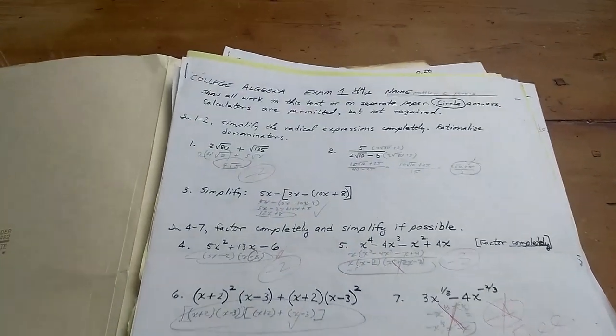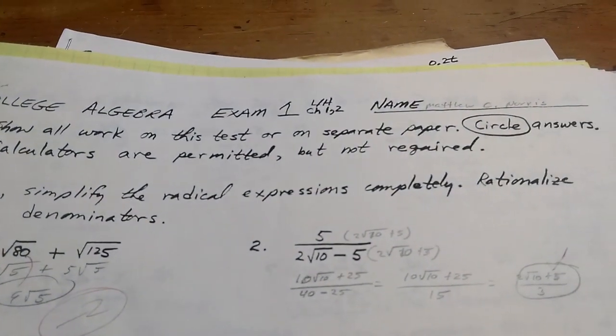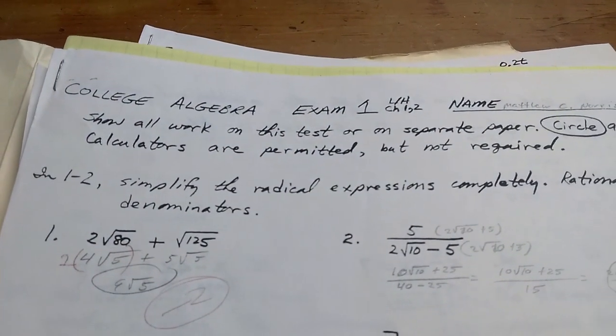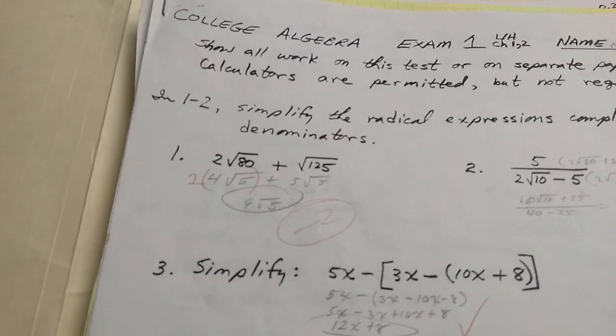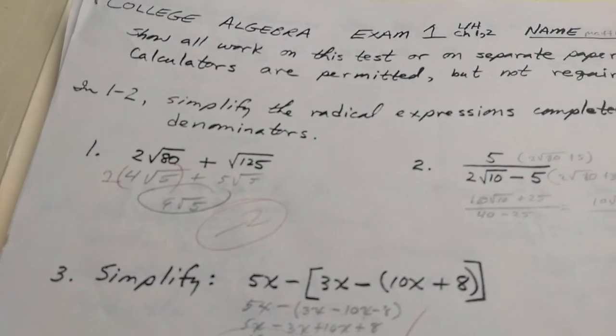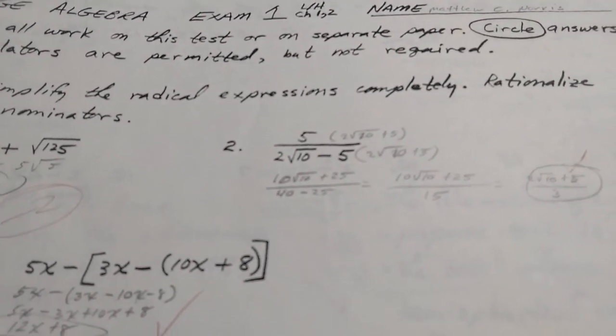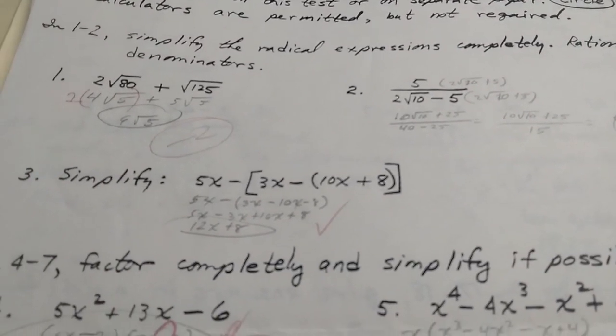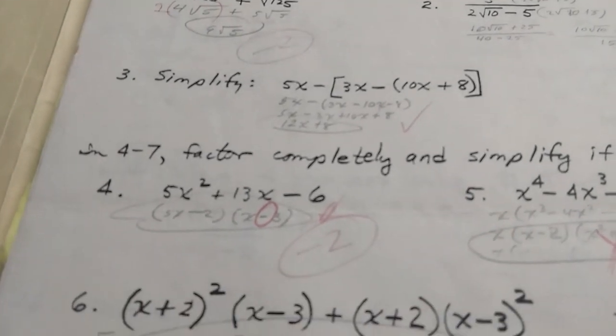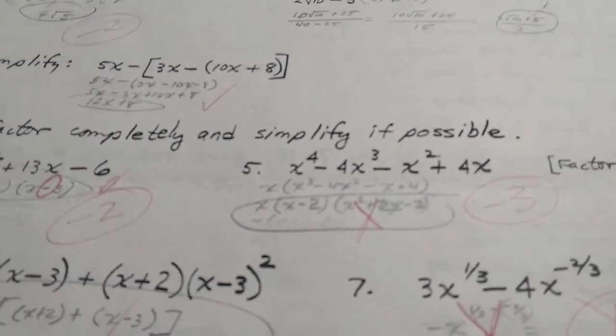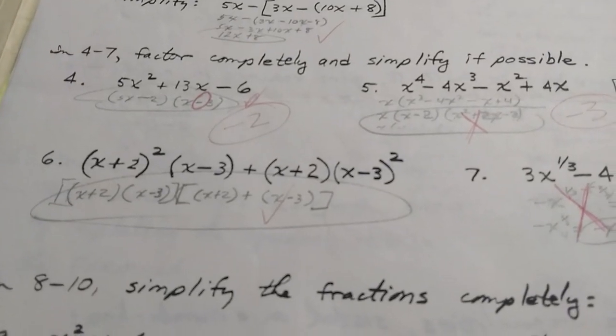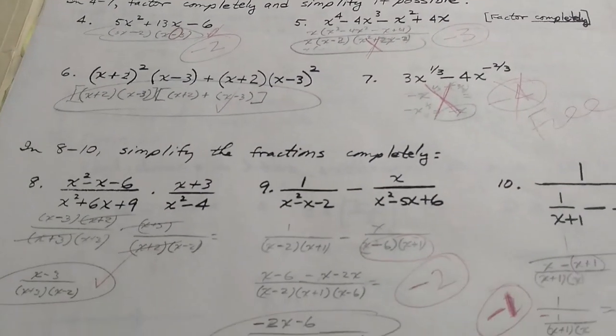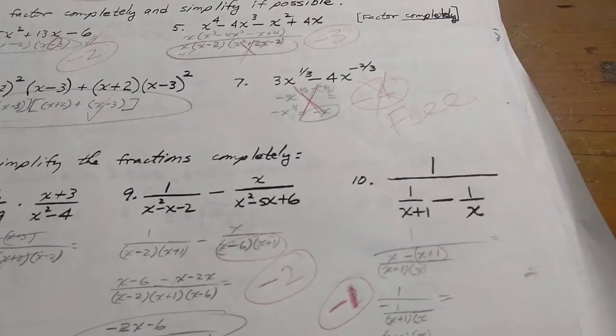Okay, so this is college algebra. This must be the first folder, exam 1. It looks like just some basic simplification here, nothing too fancy. Then we have another one here, looks like we have to rationalize, so kind of a little bit harder. Some basic simplification, factoring, right, just basic algebra, factor by grouping, more factoring. Quite a lot of factoring.